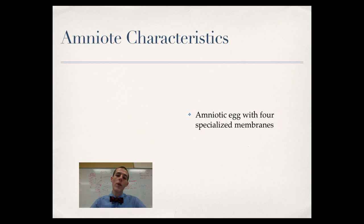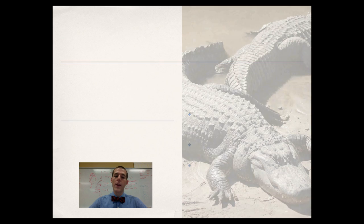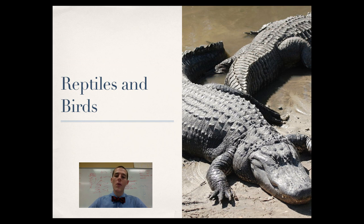Continuing forward, we've got the amniotes — organisms that have amniotic eggs with four specialized membranes. Mammals fall into this category because the placenta has four membranes, though obviously we don't have a shell. If there's an egg, that egg does have a shell — amphibians have eggs but their eggs do not have shells. Amniotes also have a rib cage that allows ventilation for the lungs, rather than the amphibian method of forcing air in through the mouth.